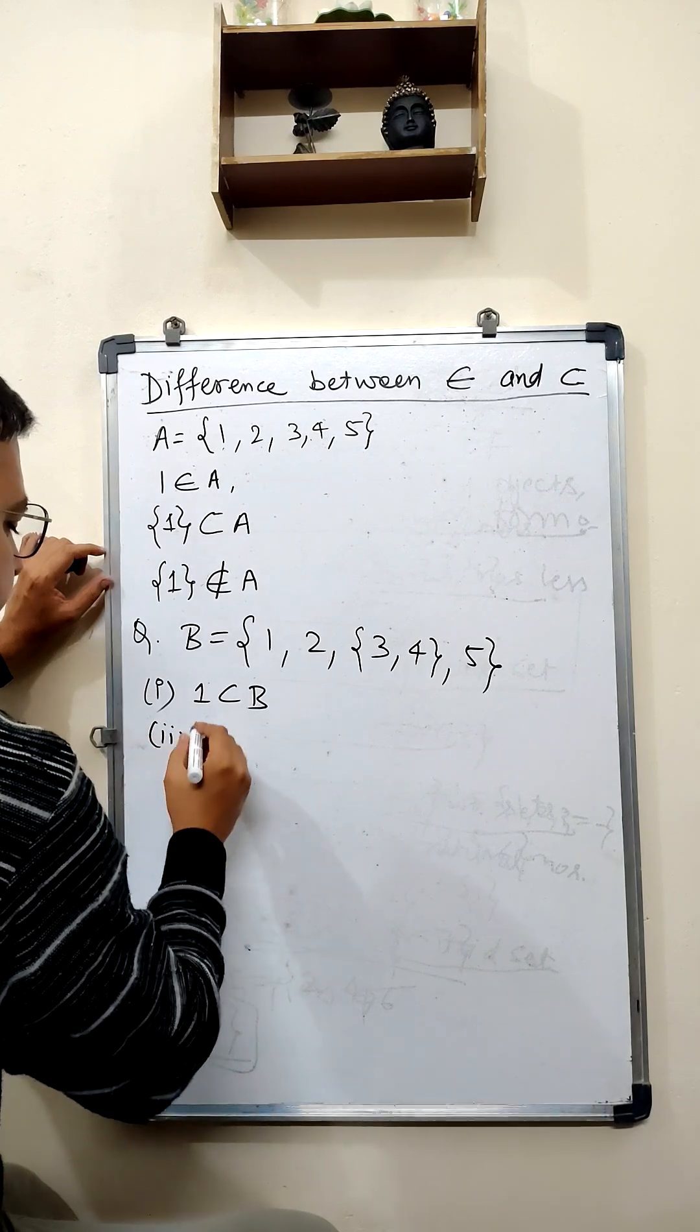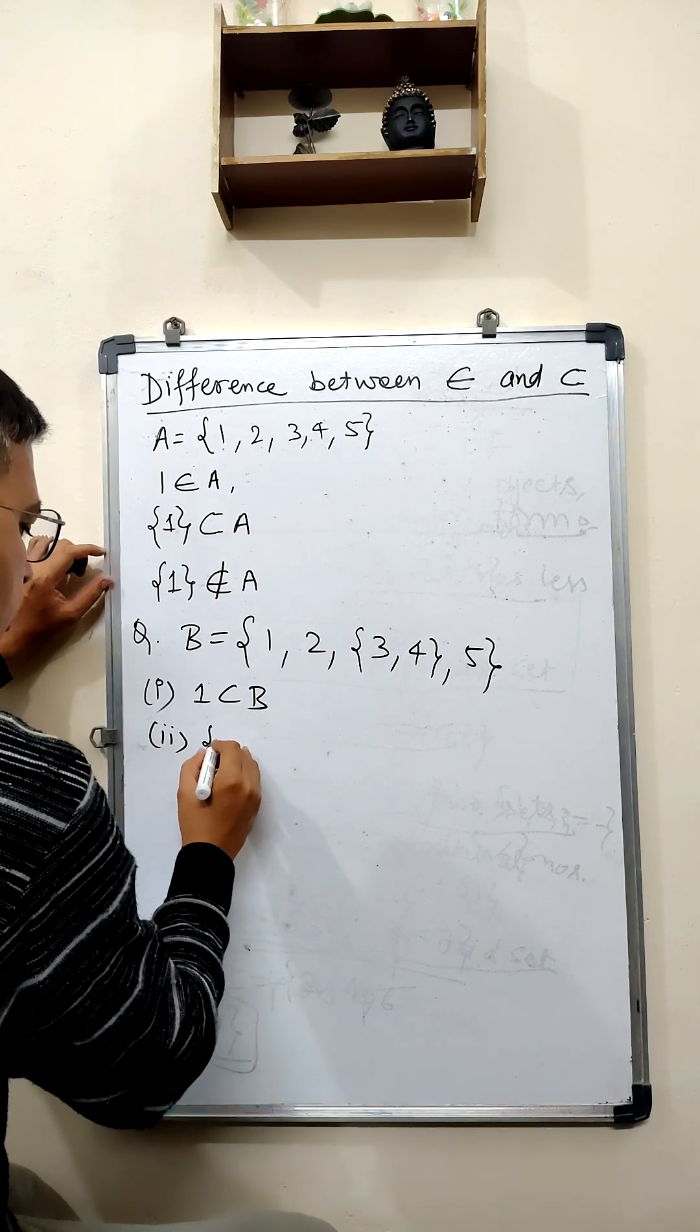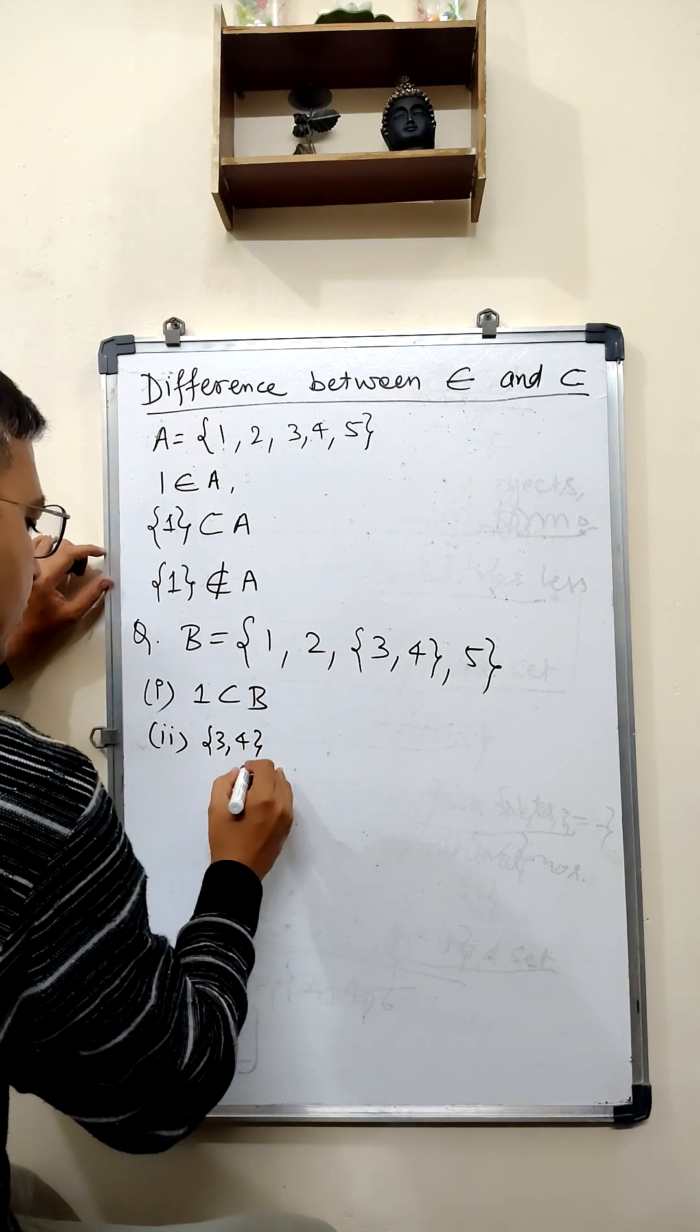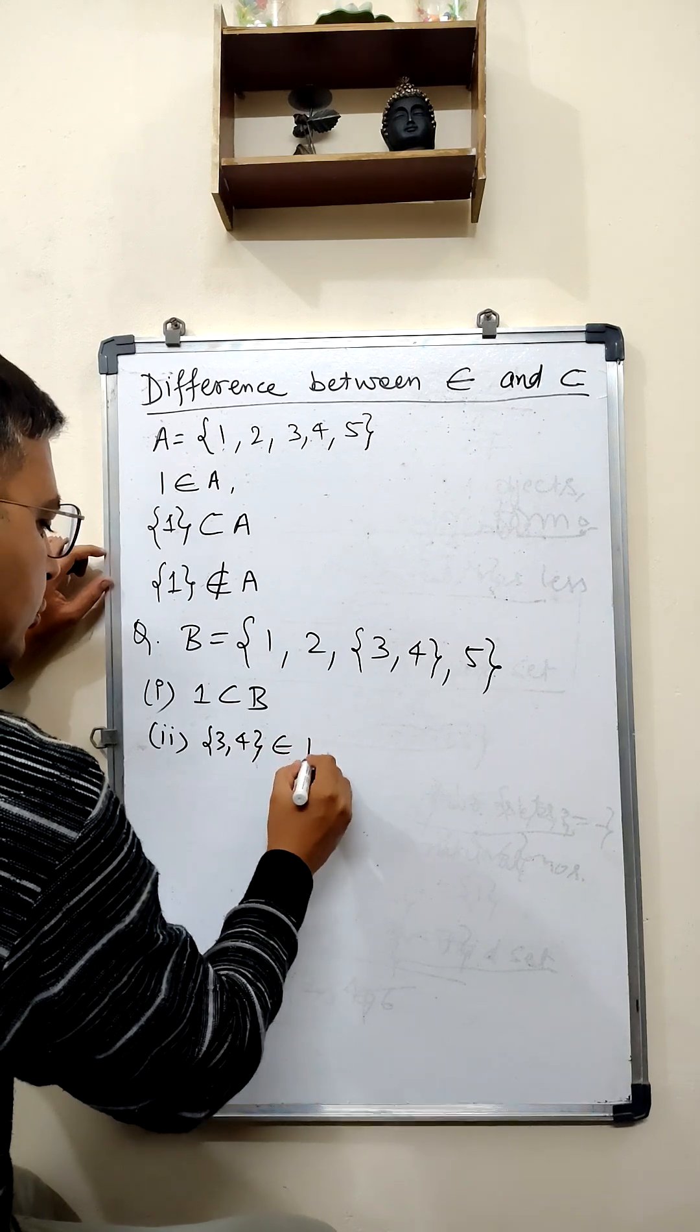Second question is, {3, 4} belongs to B.